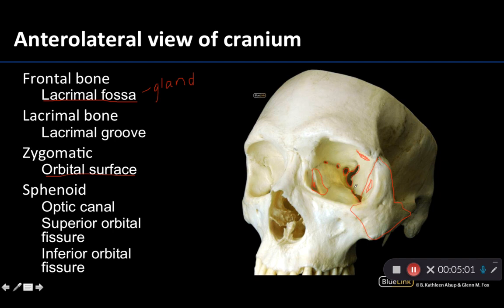Lastly, we have the inferior orbital fissure right here. As its name suggests, it is inferior to the superior orbital fissure, and you're going to have branches of the second division of the trigeminal nerve moving through here — specifically the infraorbital nerve and the zygomatic nerve.